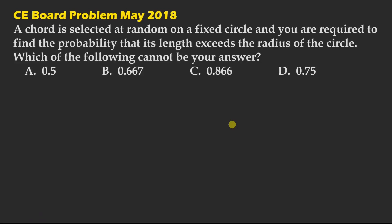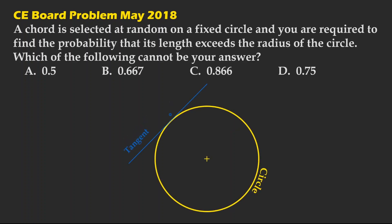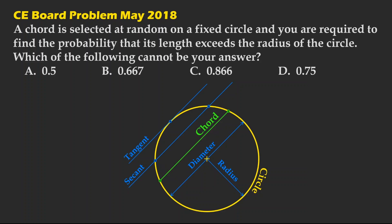Problems similar to Civil Engineering Board Exam in the Philippines. A chord is selected at random on a fixed circle, and you are required to find the probability that the length of the chord is longer than the radius of the circle. Which of the following cannot be your answer? Letter A: 0.5, Letter B: 0.667, Letter C: 0.866, Letter D: 0.75.